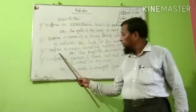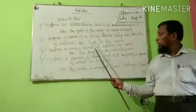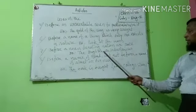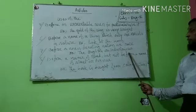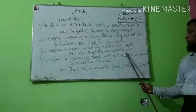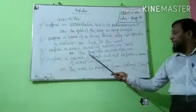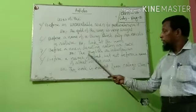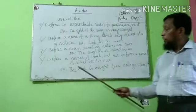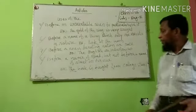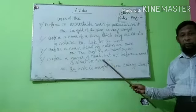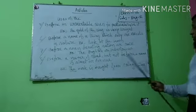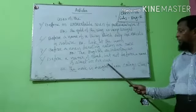Number seven: before a noun denoting a nation or race. Example: The English are industrious. Number eight: before a name of a road, but not before a name of a street or avenue. Example: The book is bought from Police Street.